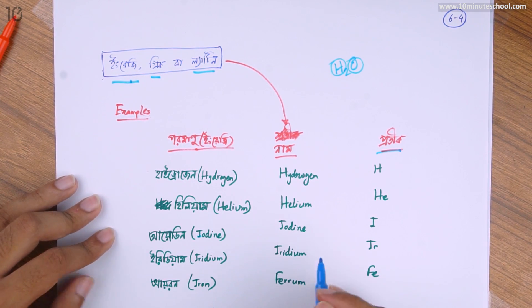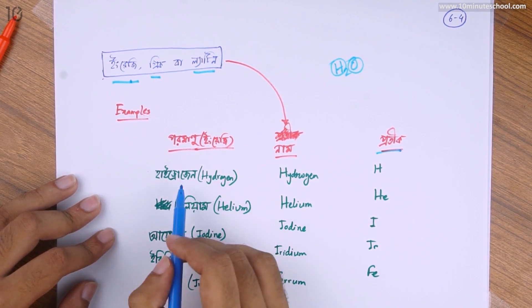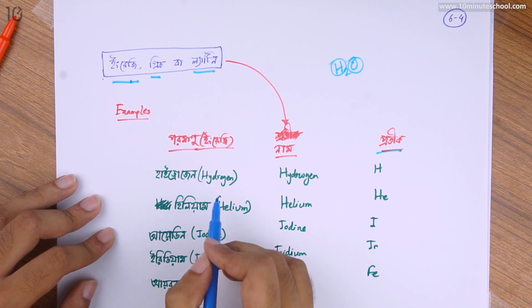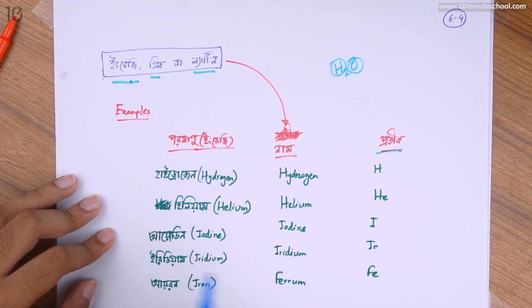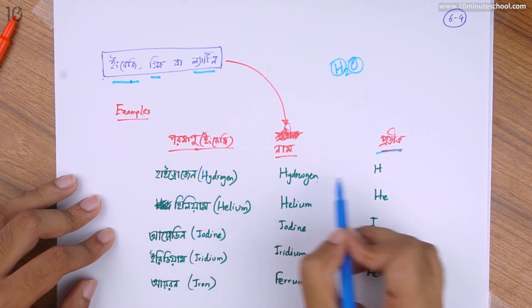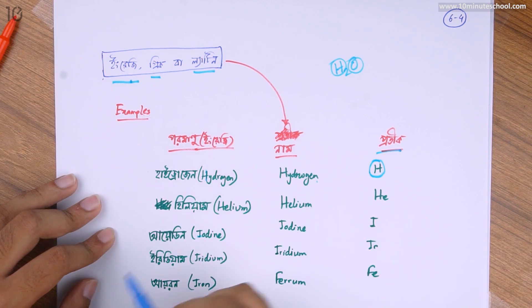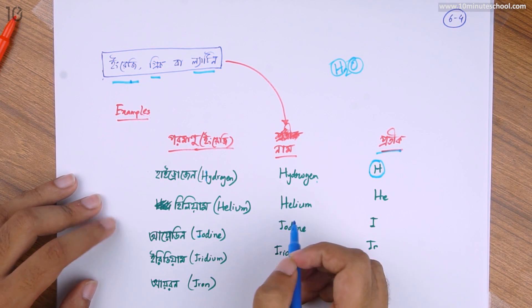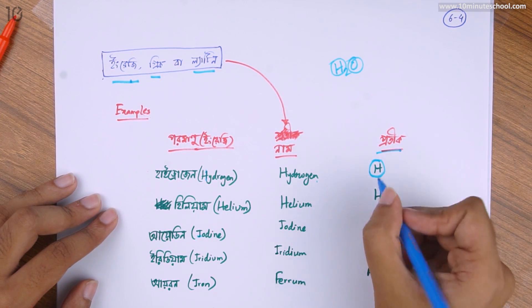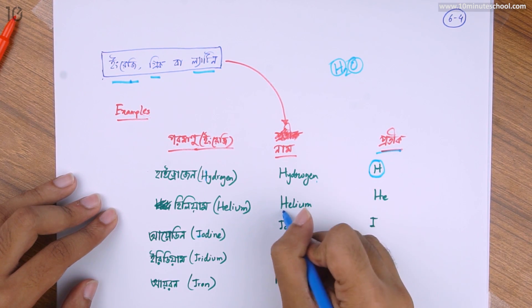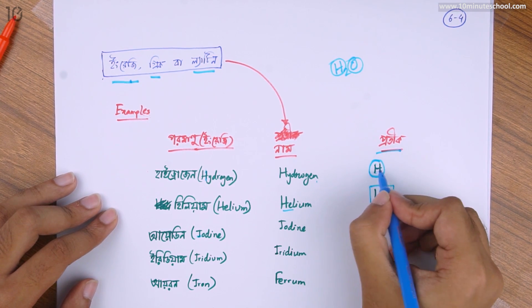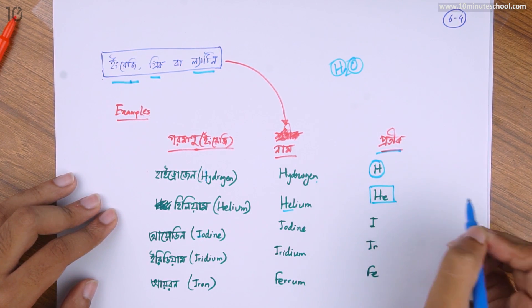This is a protein. Let's see how we can see it. The name of the first element is hydrogen. H is hydrogen. What is He? He is helium. We can write it in a small or capital way.